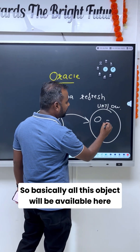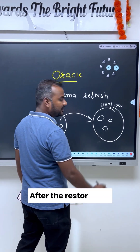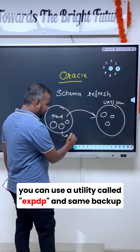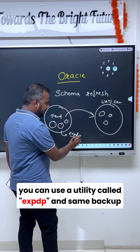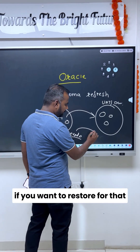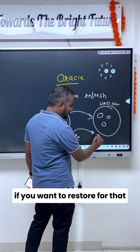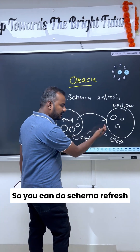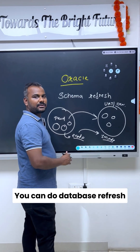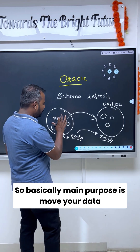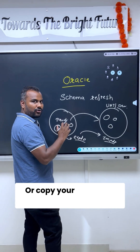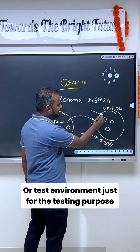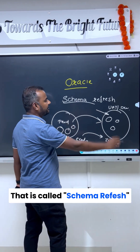After the restoration, all the objects will be available in the target environment. To take this backup, you can use a utility called expdp, and to restore that backup, you can use the impdp utility. You can do a schema refresh or a database refresh. The main purpose is to move or copy your data from production to a development or test environment just for testing purposes — that is called schema refresh.